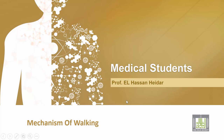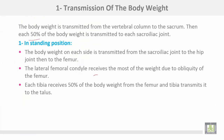Mechanism of walking. First, to start with the transmission of body weight. The body weight is transmitted from the vertebral column to the sacrum, then 50% of the body weight is transmitted to each sacroiliac joint.